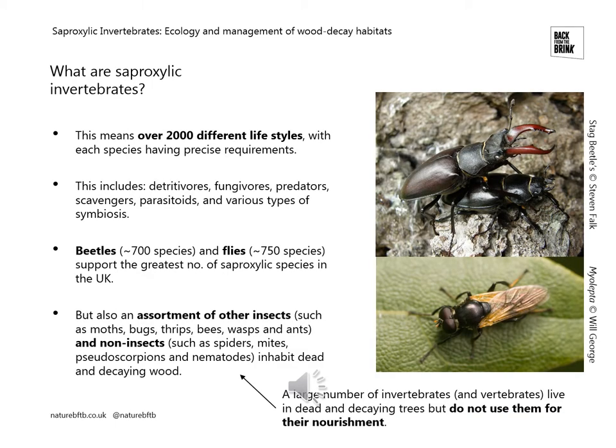With these 2,000 different species, there are 2,000 different lifestyles going on. Our saproxylic invertebrates can be detritivores, fungivores, predators, scavengers, parasitoids, and show various types of symbiosis as well.